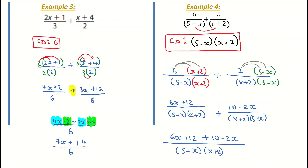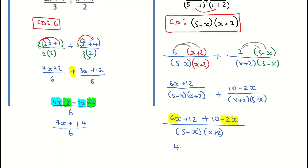Remember, you don't add the numbers on the bottom. I then group common terms: 6x minus 2x gives me 4x, and 12 plus 10 gives me plus 22. So my answer is 4x plus 22 all over (5 minus x)(x plus 2). And that's our final example, going through algebra fractions where the algebra is on the denominator of the fraction.